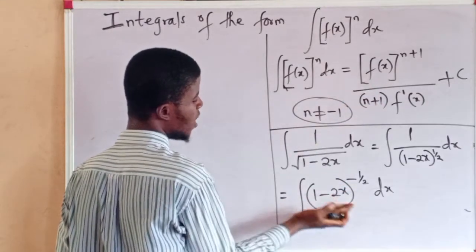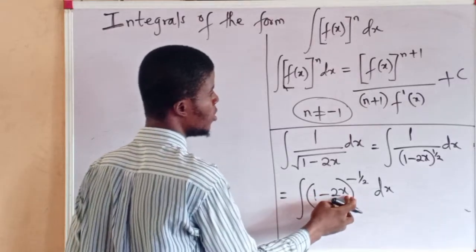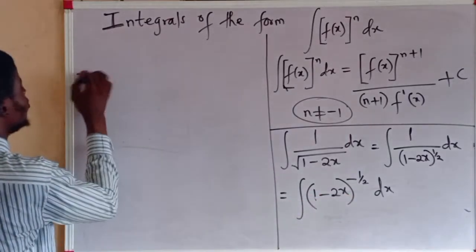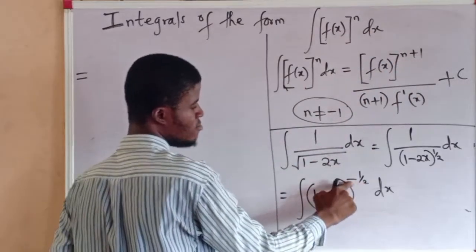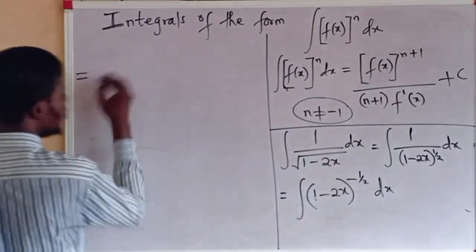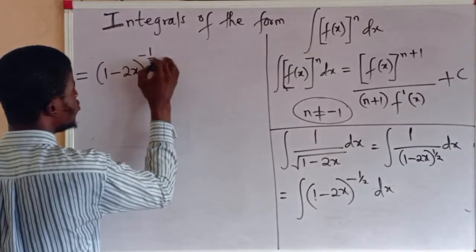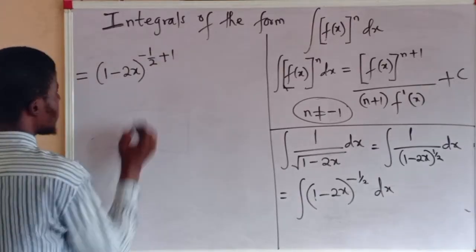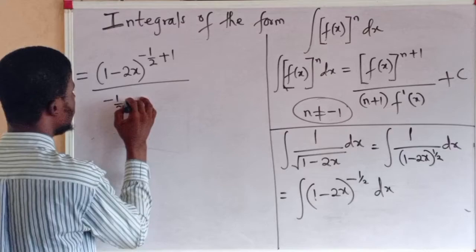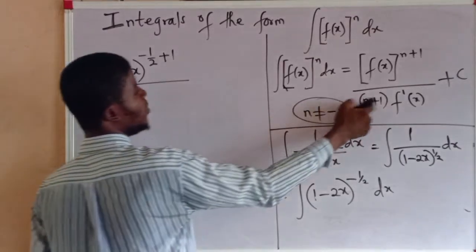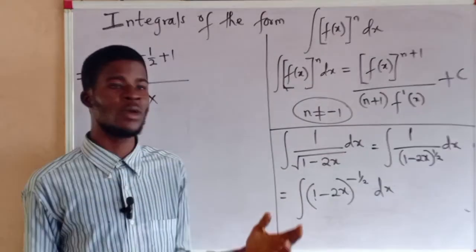Using this principle, what's f(x) here? f(x) is 1 minus 2x. So it will be equal to f(x) to the power of n plus 1. This is n minus 1 half. So 1 minus 2x to the power of minus 1 over 2 plus 1. All divided by what? Minus 1 over 2 plus 1, which is n plus 1.